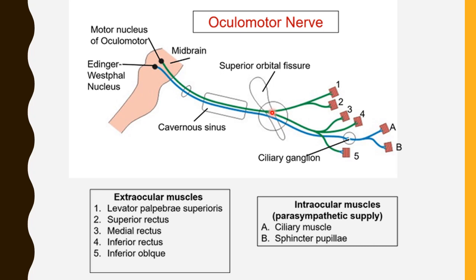The oculomotor nerve leaves the cranial cavity through the superior orbital fissure, where it divides into two branches: the superior branch and the inferior branch. The parasympathetic fibers from the Edinger-Westphal nucleus, which have been running alongside the main motor fibers through the cavernous sinus, also enter the superior orbital fissure and run along with the inferior branch of the oculomotor nerve.